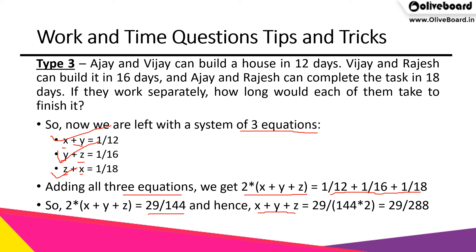Computing the right-hand side gives 29/144. Since we want X + Y + Z, we divide both sides by 2, moving the 2 to the denominator on the right. Therefore X + Y + Z = 29/288.